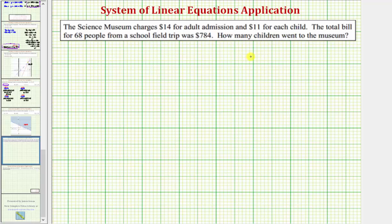We'll solve this problem using a system of equations. Let's begin by defining our variables which represent the unknowns. We don't know how many adults attended or how many children attended, so let's let A equal the number of adults and let C equal the number of children.